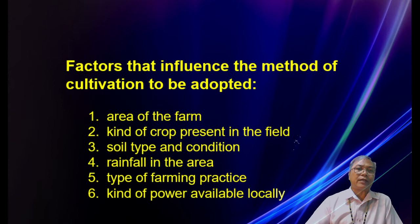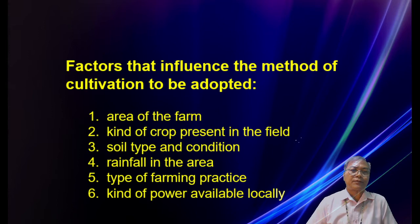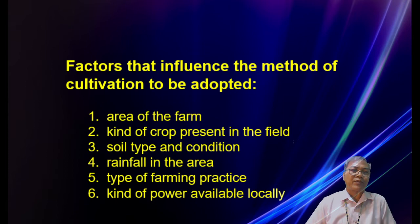Factors that influence the method of cultivation to be adopted include: the area of the farm, the soil type and condition — if the soil is very wet it may not need cultivation — the rainfall in the area, the type of farming practice — for example, if seeds were broadcast, it is difficult to cultivate because there are no definite rows — and the kind of power available in the locality.